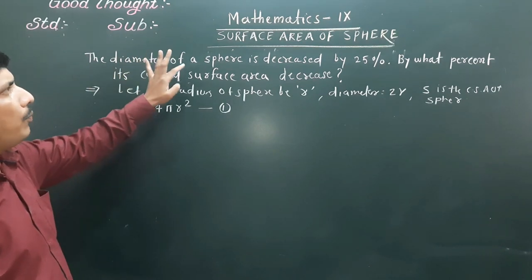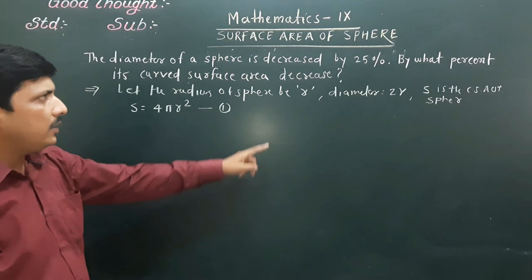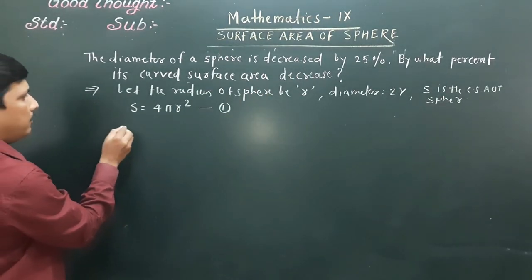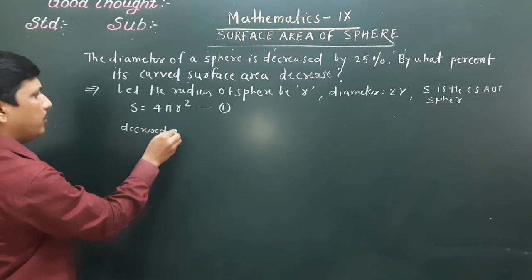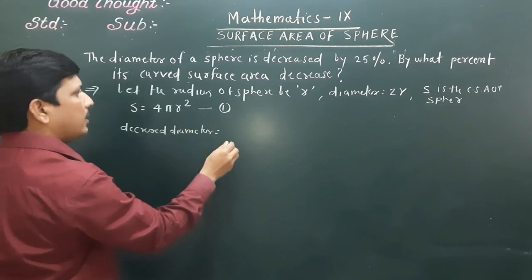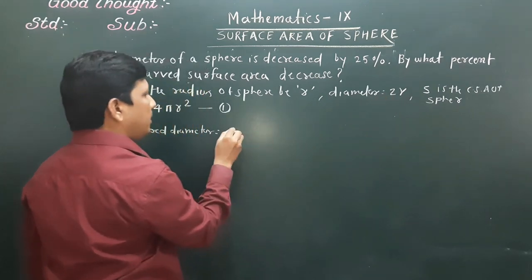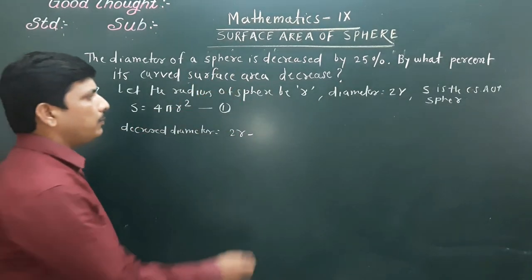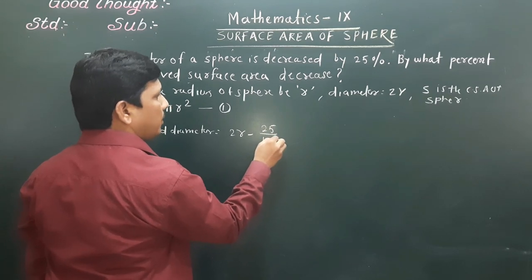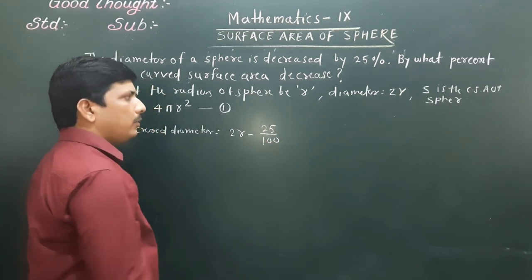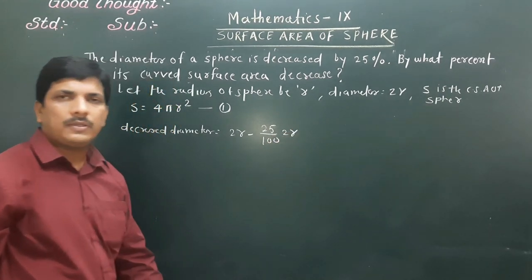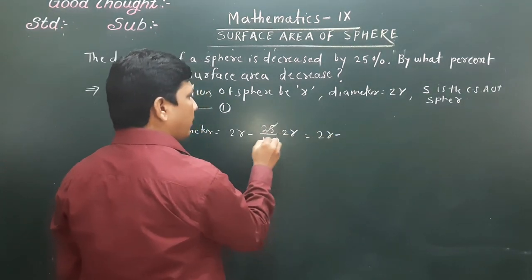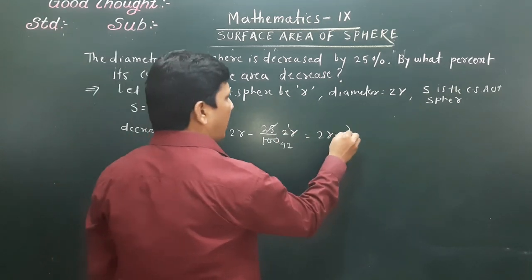The diameter is decreased by 25%. Original diameter is 2R. Decreased diameter = 2R − (25/100) × 2R = 2R − R/2 = 3R/2. So the new diameter is 3R/2.